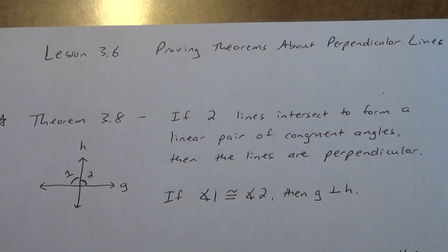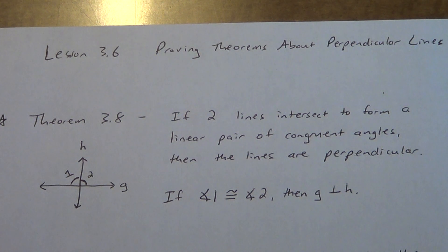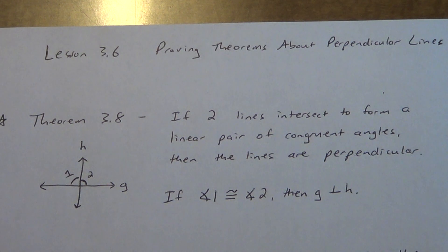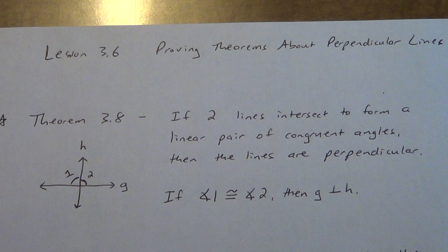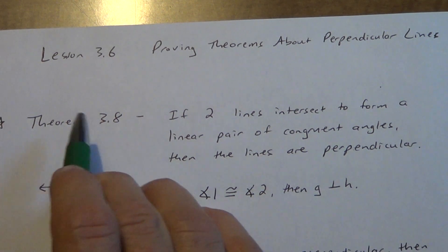Lesson 3.6 today. To keep these hopefully a little bit short, I'm going to split it into two videos again. So first off, we're going to talk about three theorems. I'm just going to kind of explain them. I'm not going to do a proof for any of these three, and then we'll do another video with two more theorems. So make sure you get these copied into your notes well. They're almost word for word what's out of the book, but I will explain them at least a little bit, even though I'm not going to prove them.